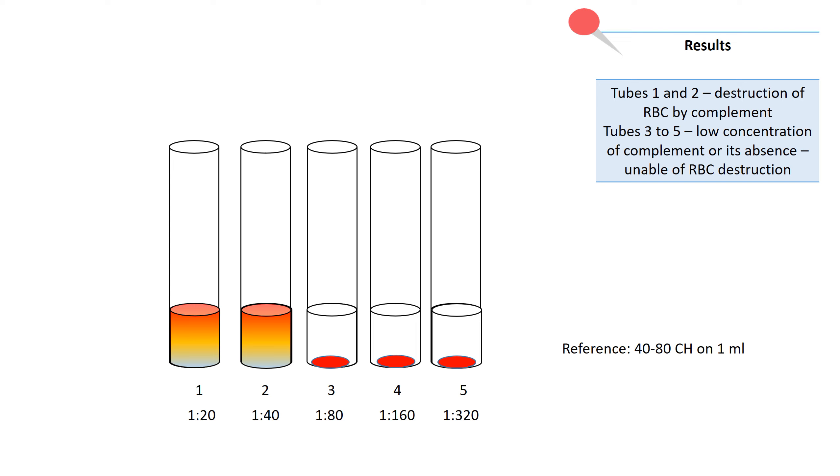Tubes 3 to 5 don't have hemolysis or delayed hemolysis because low concentration of complement or its absence. And low concentration of complement is unable for total RBC destruction.